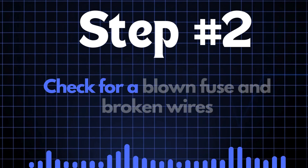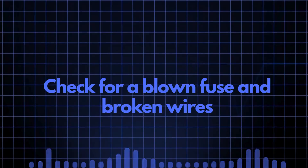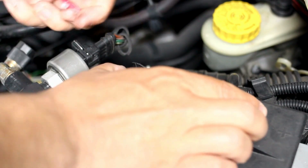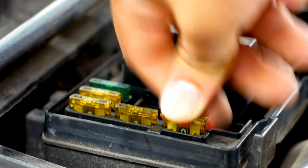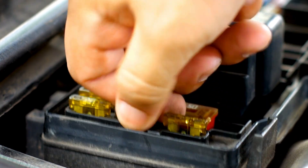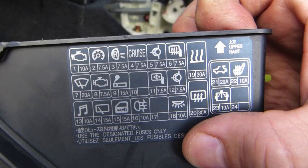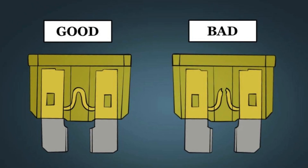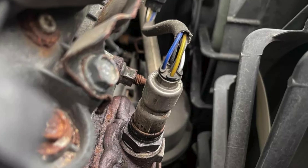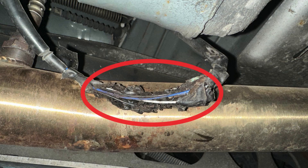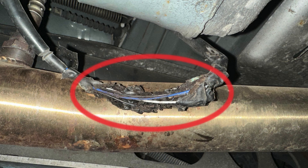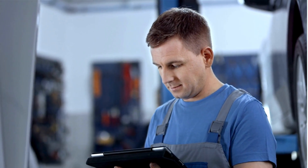Step 2: Check for a blown fuse and broken wires. First, locate your car's fuse box. You'll need to find the specific fuse that controls the oxygen sensor heater circuit. To do that, check the diagram on the back of the fuse box cover — it'll tell you which fuse is the one you're looking for. Once you've found the fuse, inspect it closely. If the fuse link is broken, it'll need to be replaced. Next, check the wiring around the oxygen sensor. Look for any broken or frayed wires. If you spot any damage, repair the wires and recheck to see if the P0032 code is cleared.